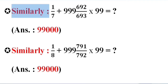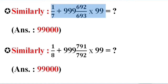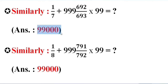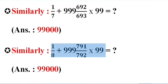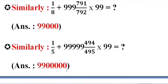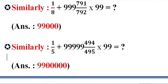Similarly, 1 by 7 plus triple 9 and 692 by 693 into 99 equals what? Answer: double 9 triple 0. Similarly, 1 by 8 plus triple 9 and 791 by 792 into 99 equals what? Answer: double 9 triple 0. Similarly, 1 by 5 plus 5-digit 9 and 494 by 495 into 99 equals what? Answer: double 9, 5-digit 0.